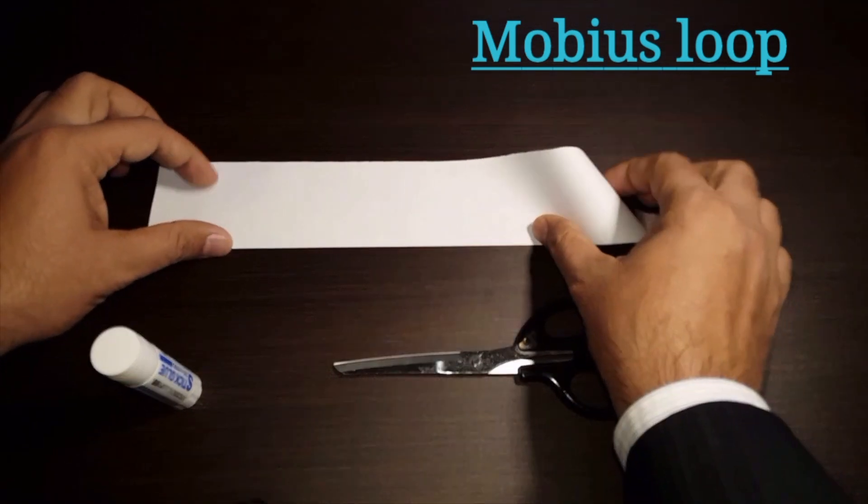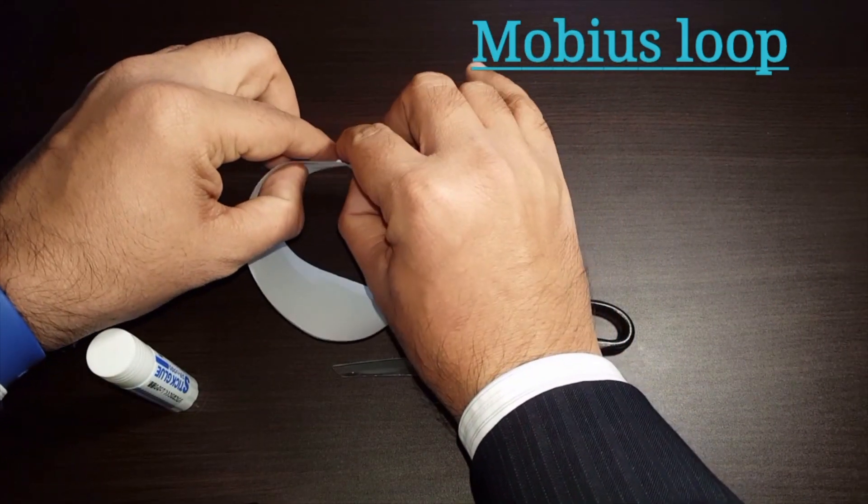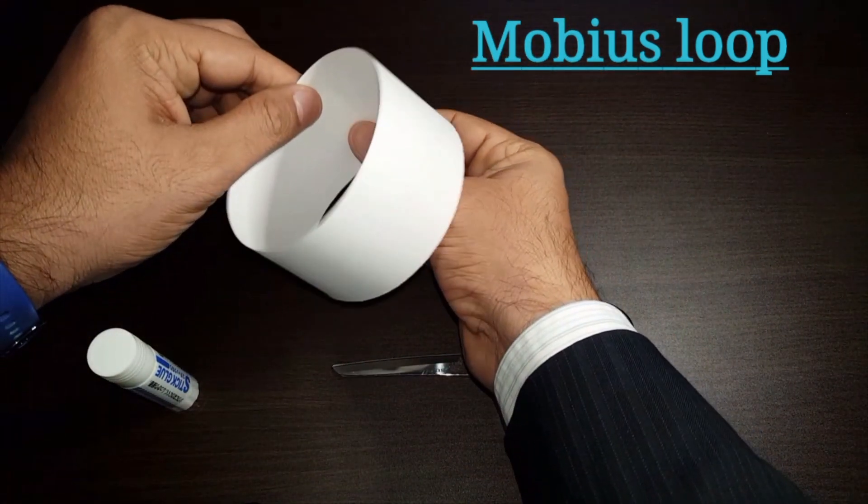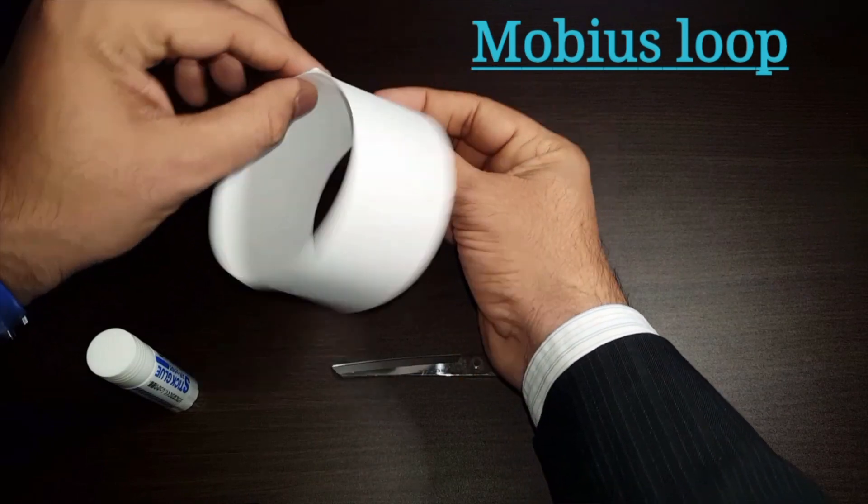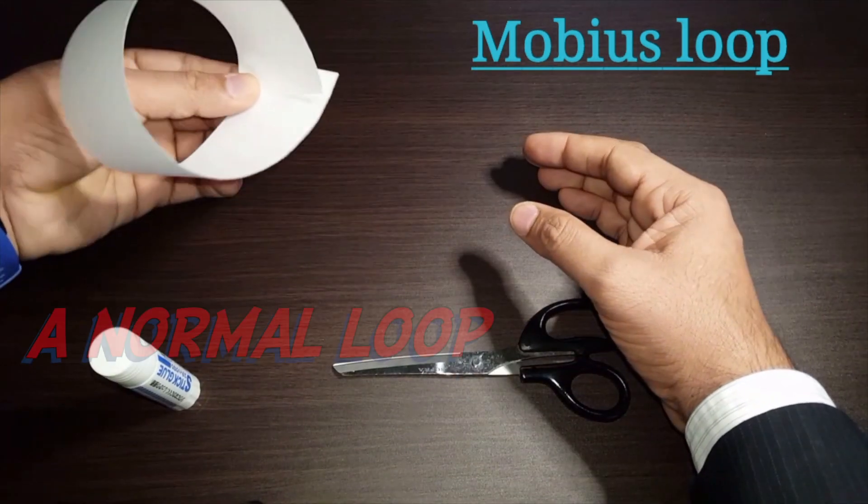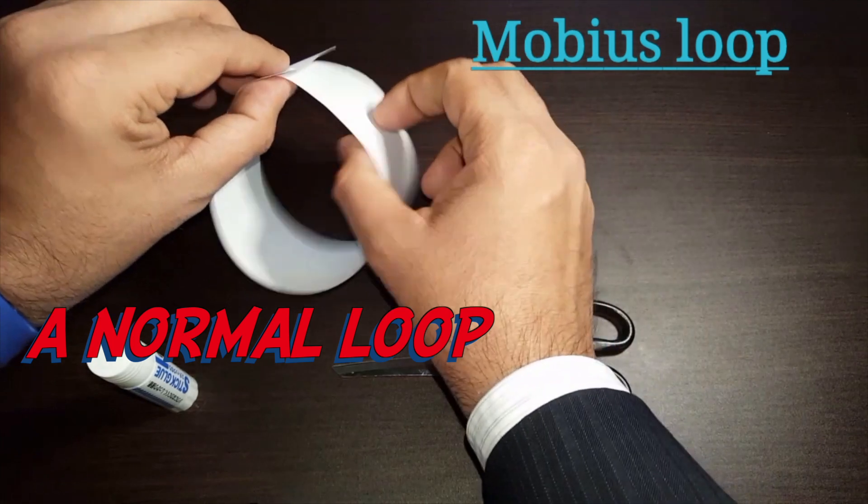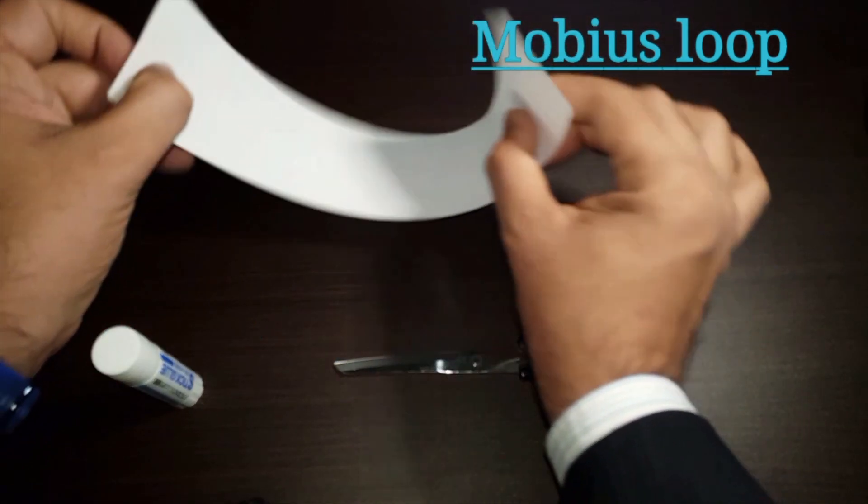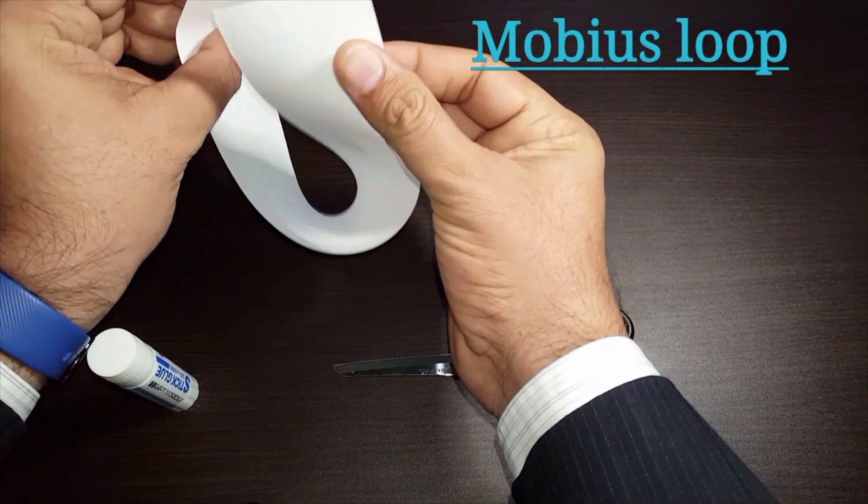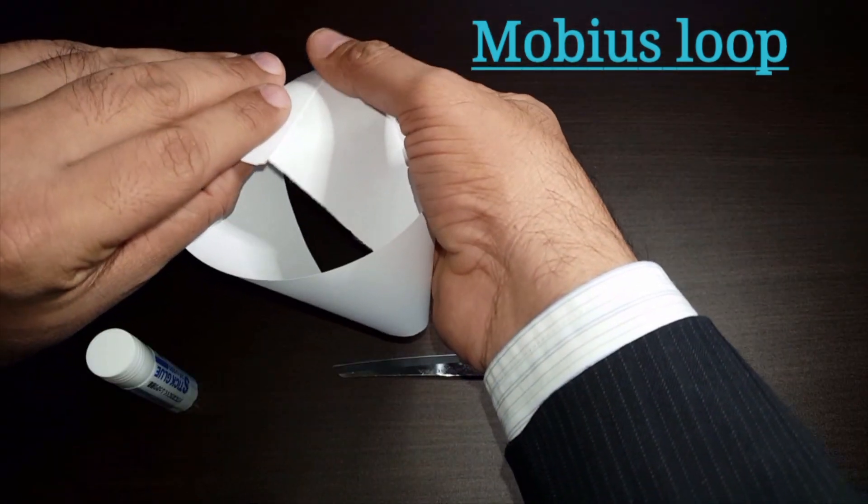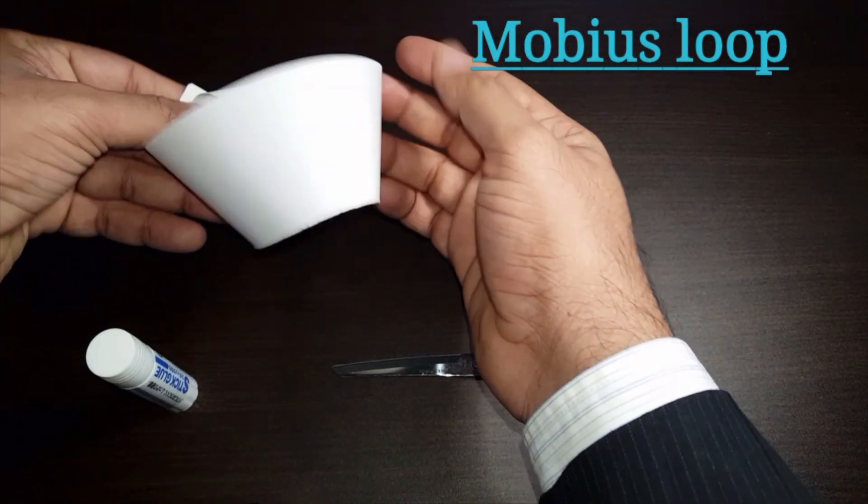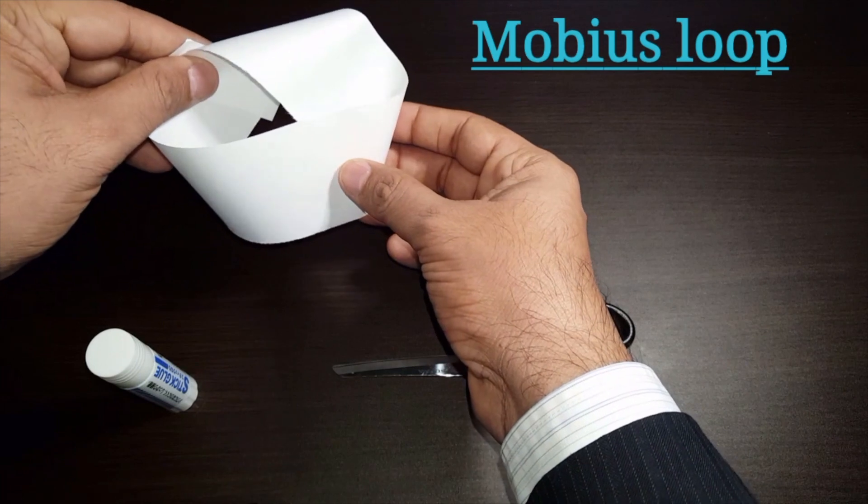Now, if you just connect the two sides, stick the two sides together like so, this is a normal loop. There's nothing magical about it. But if you connect it this way, then it becomes a Mobius loop. It's also the symbol of recycle. So the triangular symbol of recycling is actually this Mobius loop.